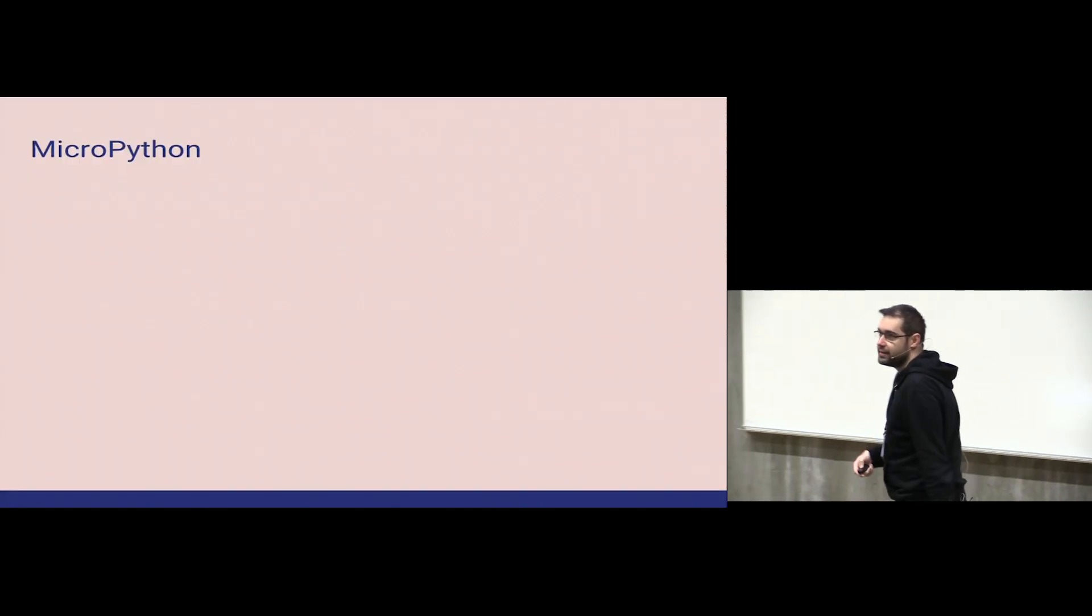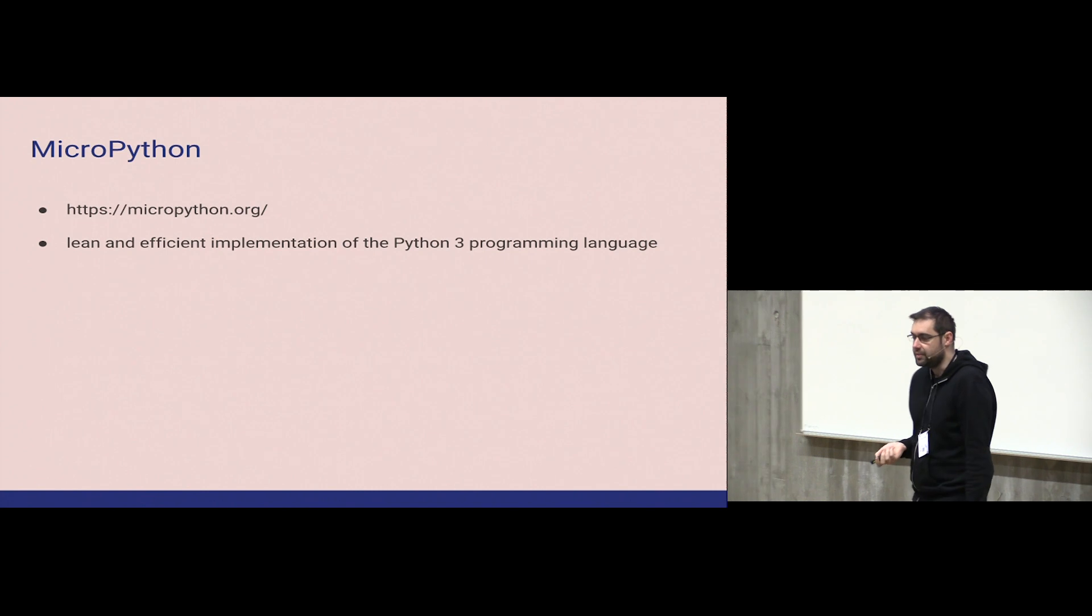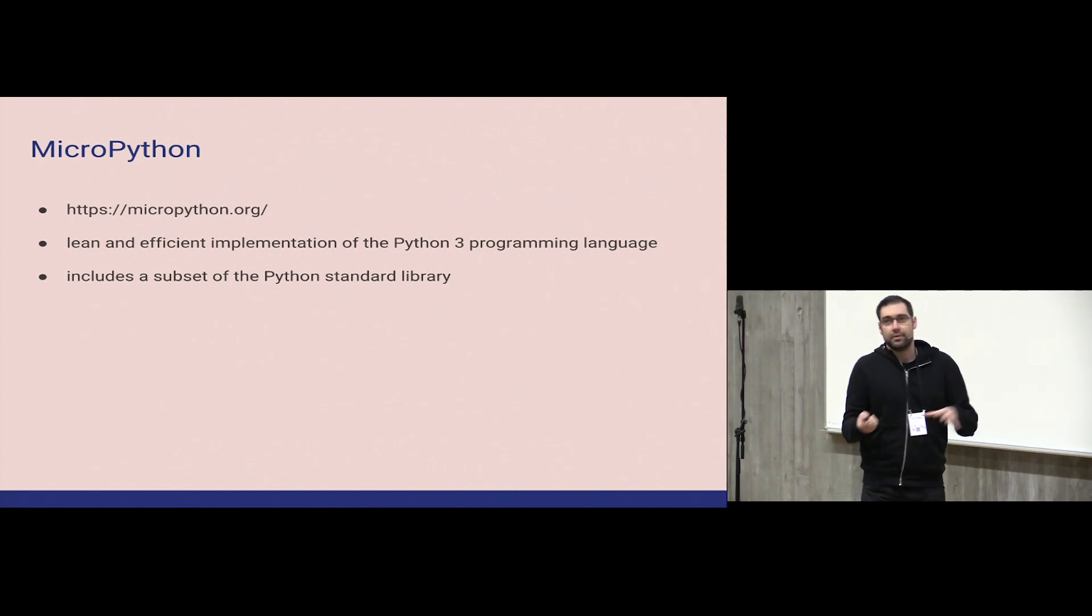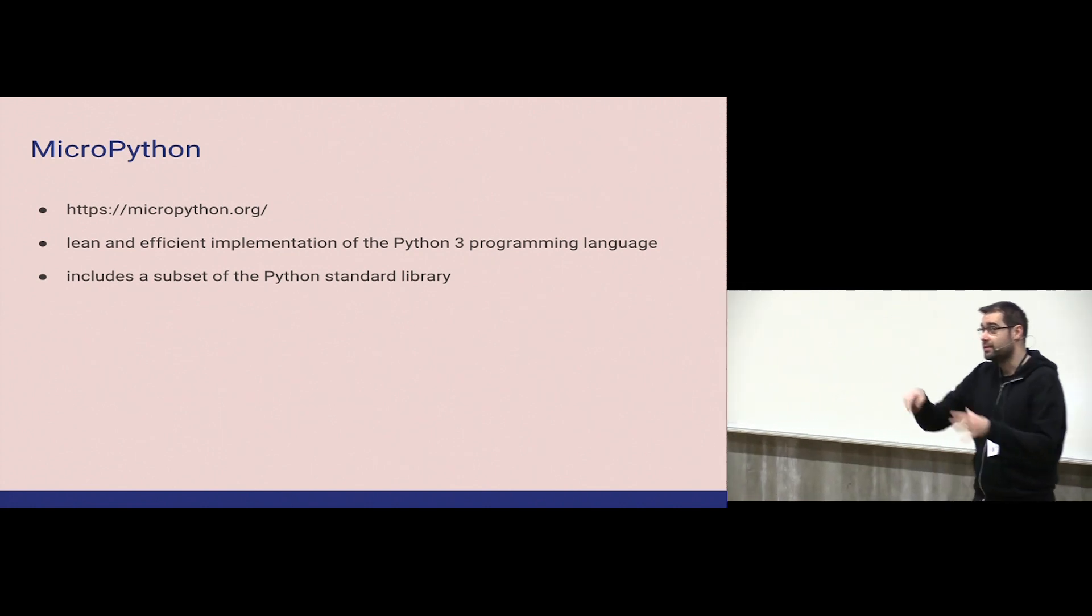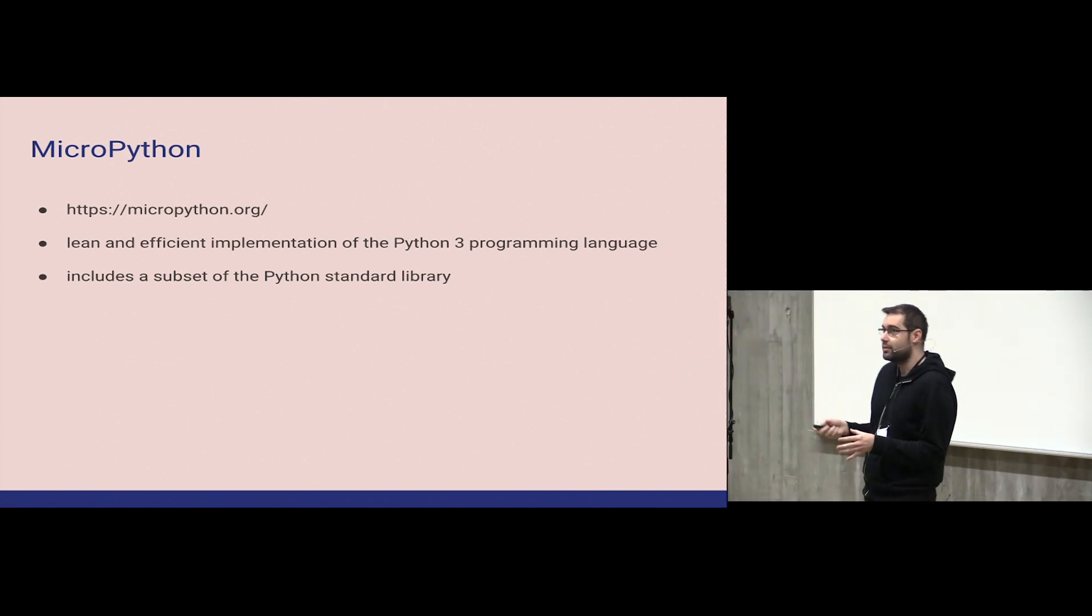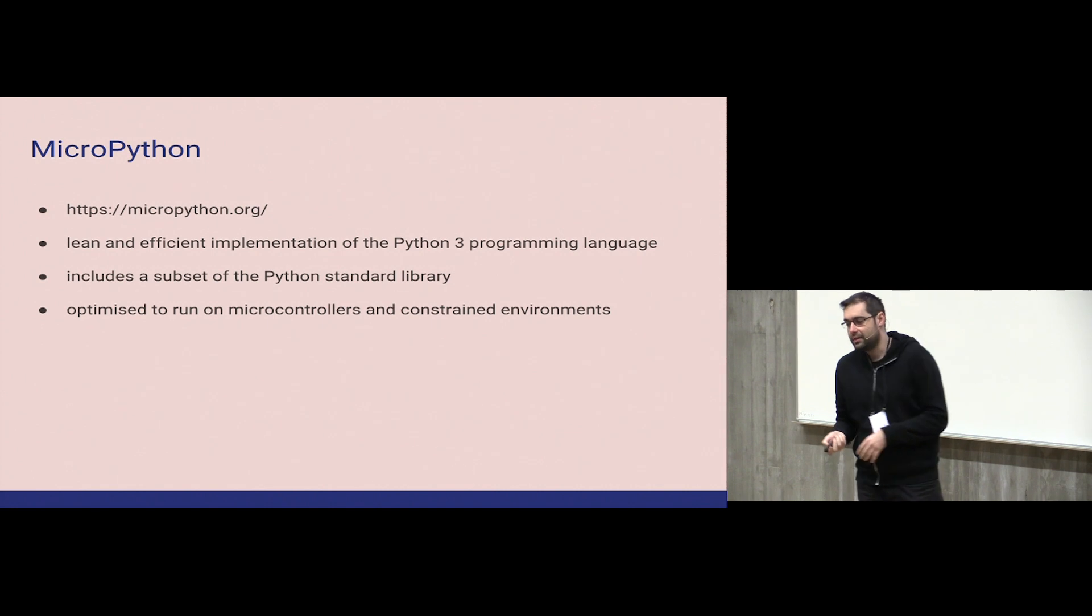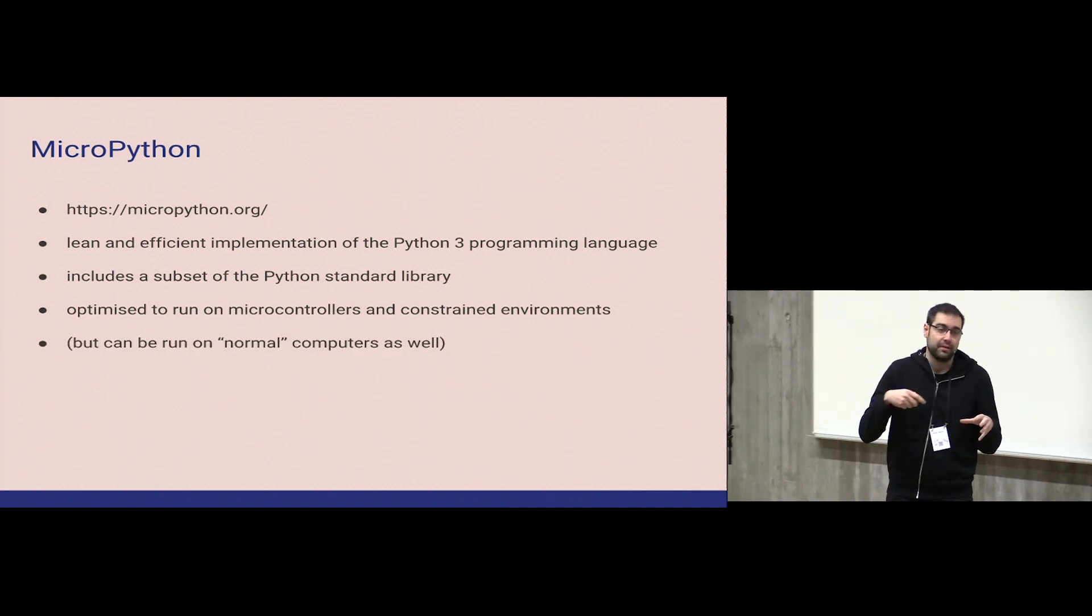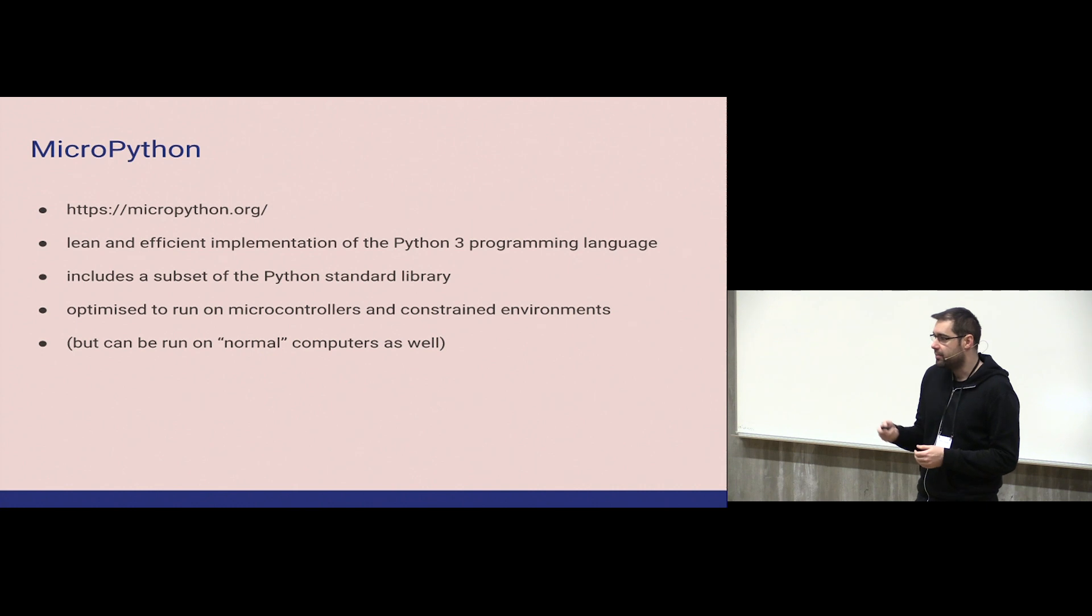Just to summarize the previous talk, MicroPython is available from this website. It's a lean and efficient implementation of the Python 3 programming language and it includes a subset of the standard Python library. This is important because you can use what is already there, what you are used to, but not everything is there. The good thing about it is that what's already in there is usually pretty well optimized for microcontrollers. Also MicroPython can be used on normal computers as well. So you can build a binary on Windows, Mac, Linux and use it like it was a regular Python.